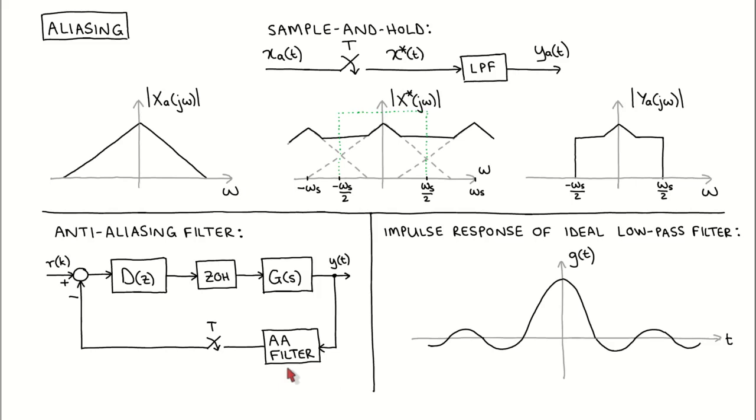However, we do not want the cutoff frequency of the anti-aliasing filter to be close to the closed loop bandwidth of the control system, since it would then influence the dynamics of the control system. If the closed loop bandwidth is relatively high, then it might be necessary to include the dynamics of the anti-aliasing filter in the plant model.